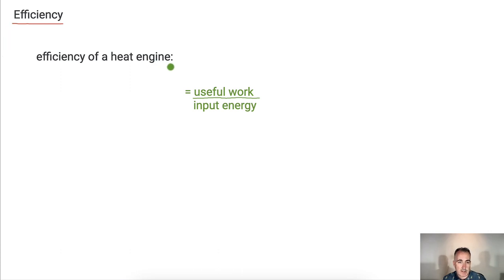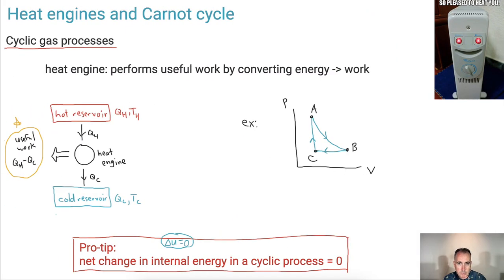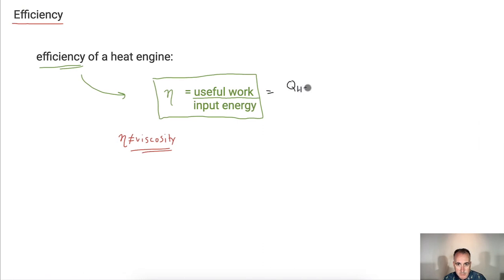So now we can define the efficiency of any old heat engine. We're going to use this Greek symbol right here. By the way, this is an important piece here. This, we don't mean viscosity, okay? Because I know we also use this same symbol for viscosity here. We don't mean viscosity. We mean efficiency, okay? This is really important. We want the efficiency of a heat engine is actually just equal to this. So it's the useful work over the input energy. Now, how do you actually use this? There's an important thing you can do. Remember I just talked about the useful work is just related to this change here, QH minus QC. So we're going to write that down. So QH minus QC, and divide that by the input energy, which is just QH.